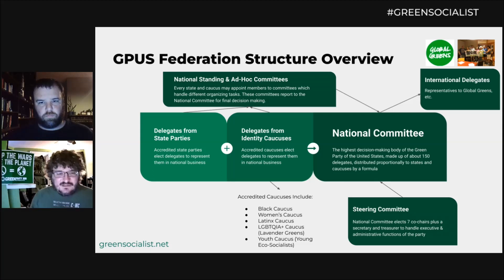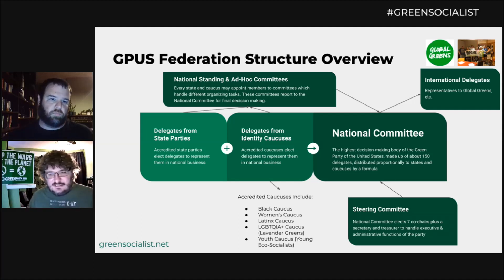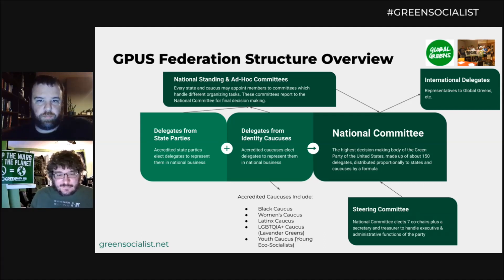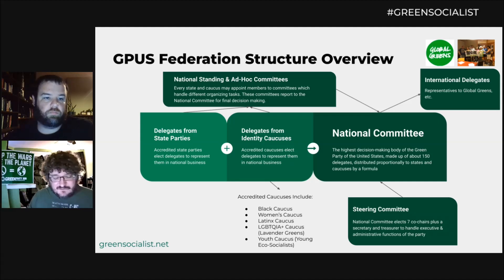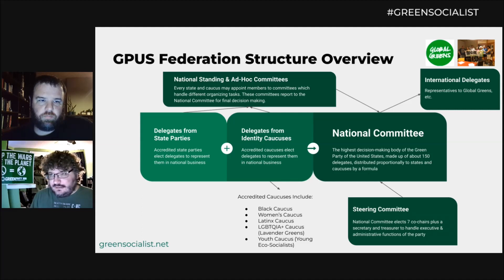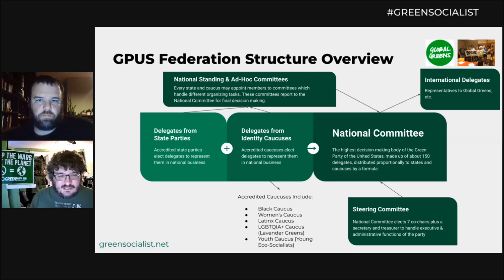The Green National Committee is kind of like our Congress. It's where all of the representatives from our states and caucuses get together, and they discuss and vote on our national party policy — that could be anything from updating our national party platform. If you want to see changes to the platform, you can talk to the delegates from your state party to the national committee and ask them to support a platform change. They also vote on endorsing events — marches, national rallies — and obviously supporting candidates when we can.